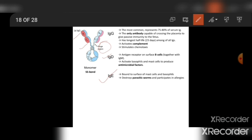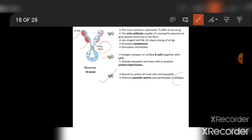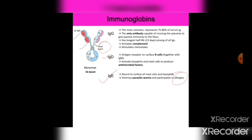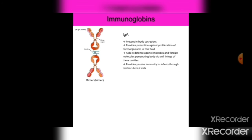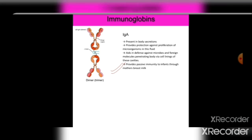IgE is bound to the surface of mast cells and basophils; it destroys parasitic worms and participates in allergic reactions. IgE plays an important role in allergies. IgA is present in body secretions and provides protection against proliferation of microorganisms in body fluids. It defends against microbes and foreign molecules penetrating the body via cell linings of cavities, and provides passive immunity to infants through mother's breast milk.